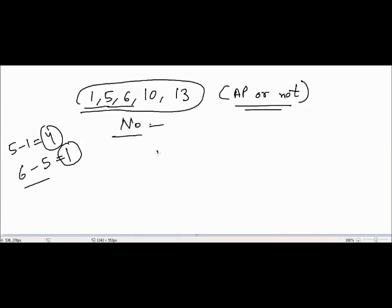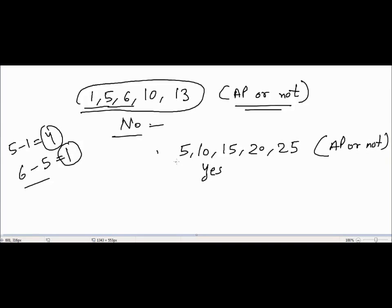Let's take another example: 5, 10, 15, 20, 25. Is this an AP? Yes, it is an arithmetic progression, because the difference between any two consecutive terms is equal to 5. For instance, 10 minus 5 equals 5, 15 minus 10 equals 5, and 20 minus 15 equals 5, and so on.